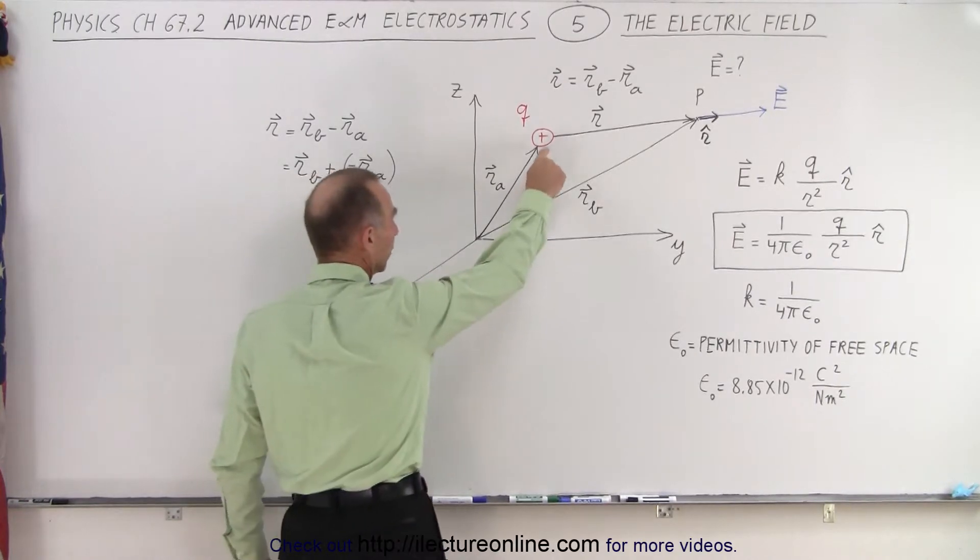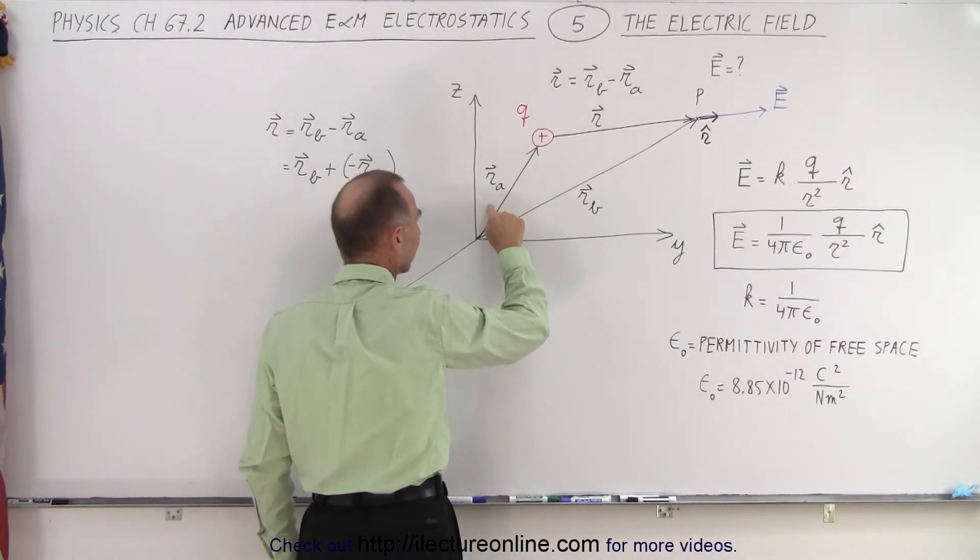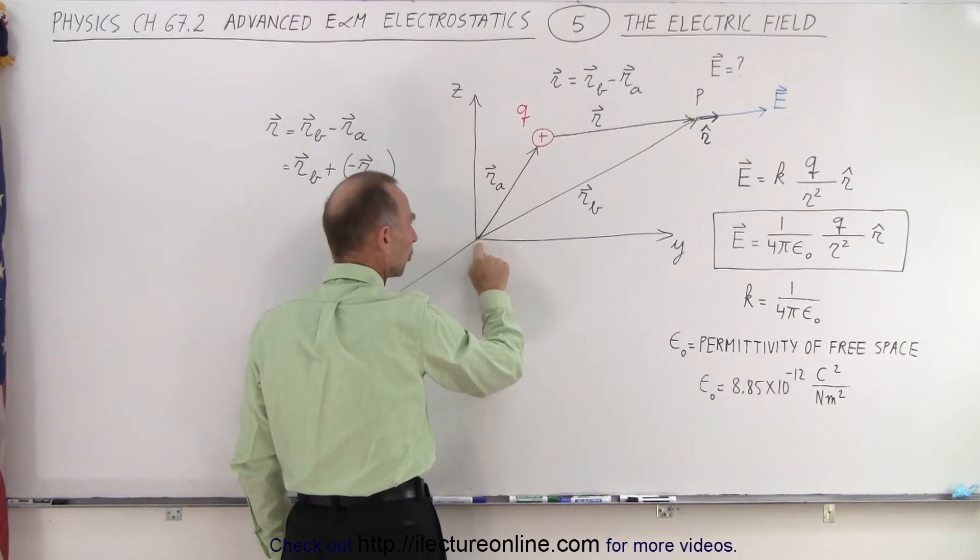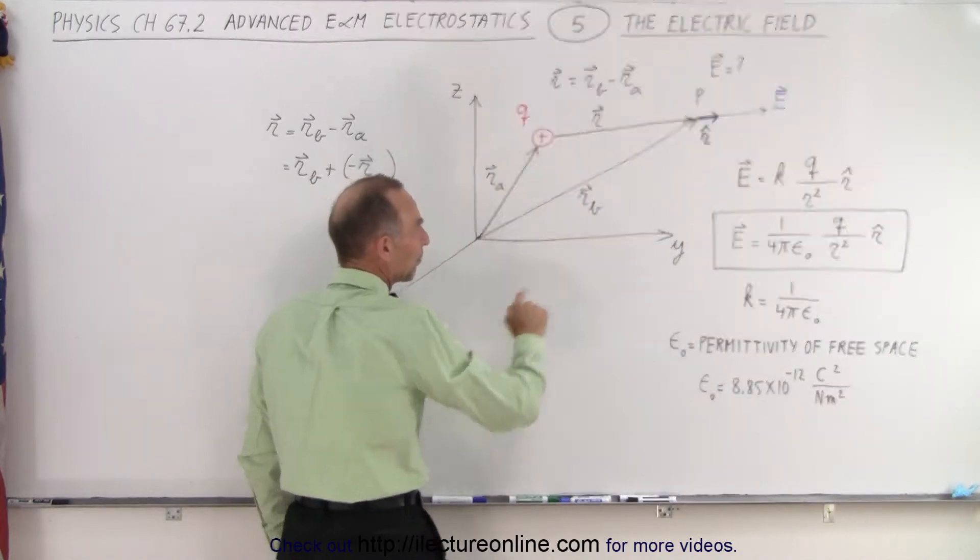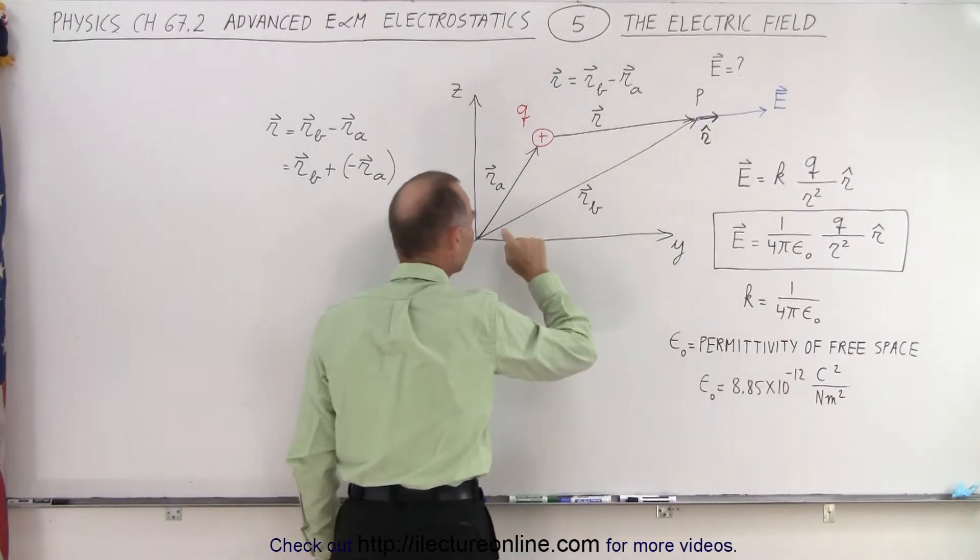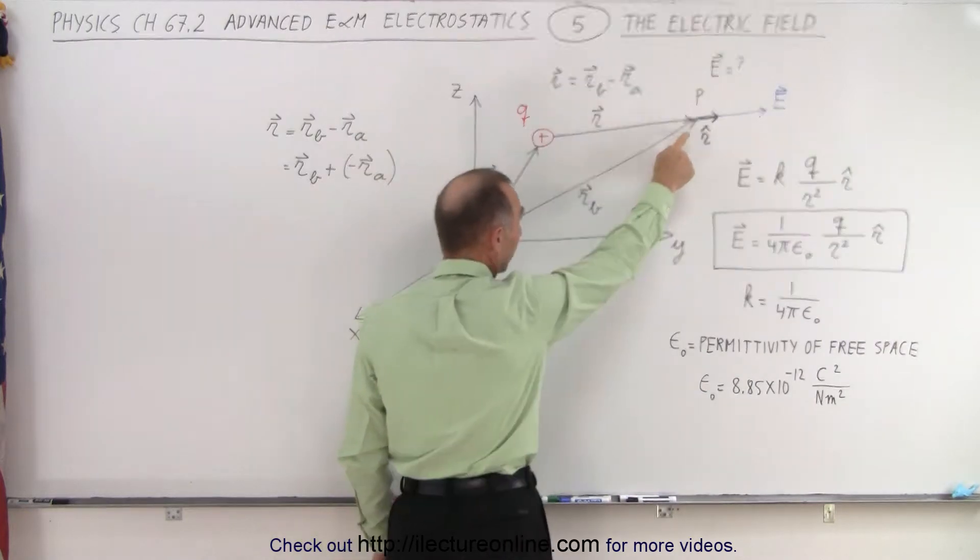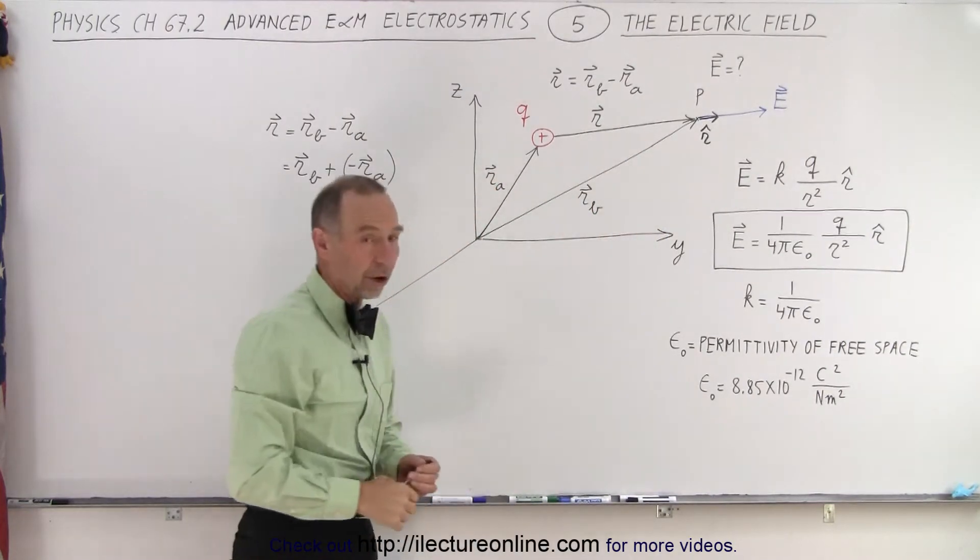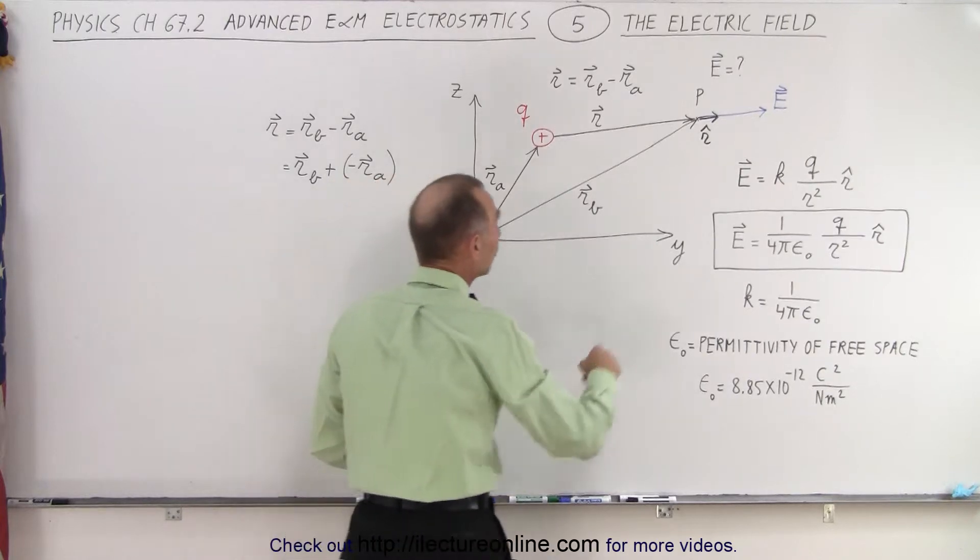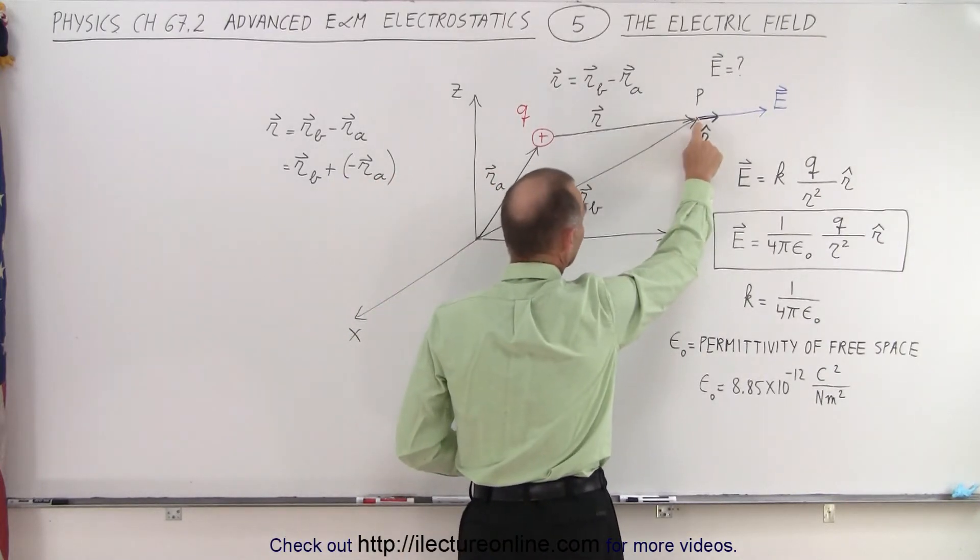Let's say we have a charge somewhere in space called q at a distance r sub a from the origin. We have a point in space and the distance or direction to that point is defined by this vector r sub b, and we will have an electric field at that point.